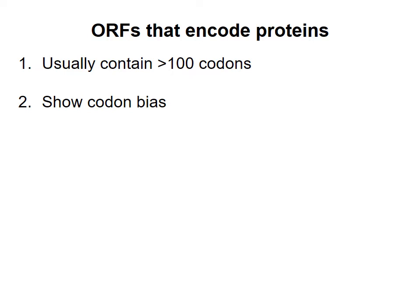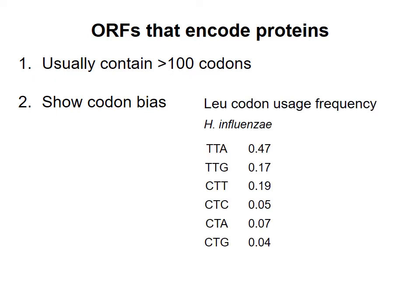Second, most amino acids are encoded by more than one codon, and it turns out that not all codons are used with the same frequency in mRNA. Each organism has a codon bias. For example, the amino acid leucine is associated with six codons. Study of the H. influenzae genome shows that leucine is coded for almost half the time by TTA, with other codons being used less frequently.